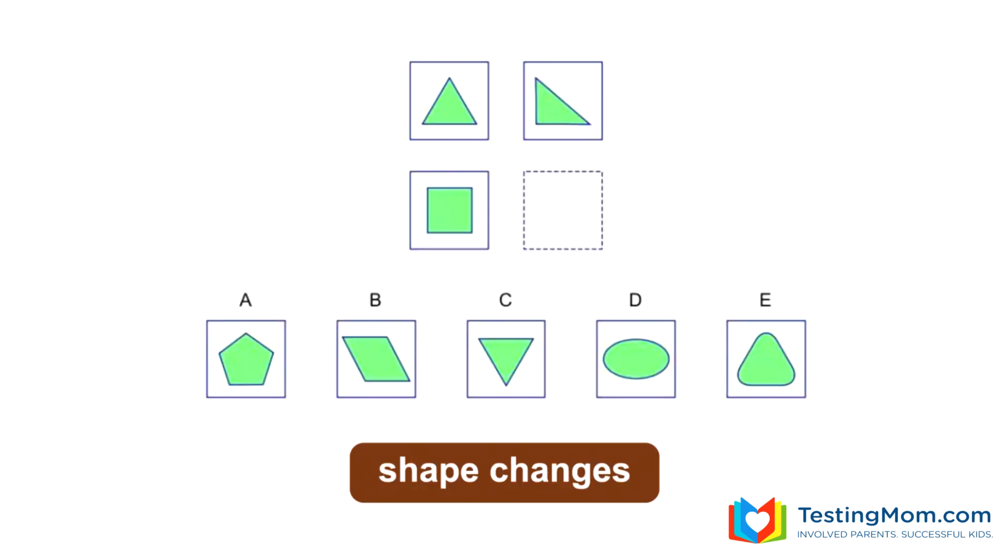Now let's look at an analogy puzzle. The rule in the top boxes is that the first shape leans to the far left and stretches a bit. If we apply the same rule to the square on the bottom, it would lean to the far left and B becomes the answer.